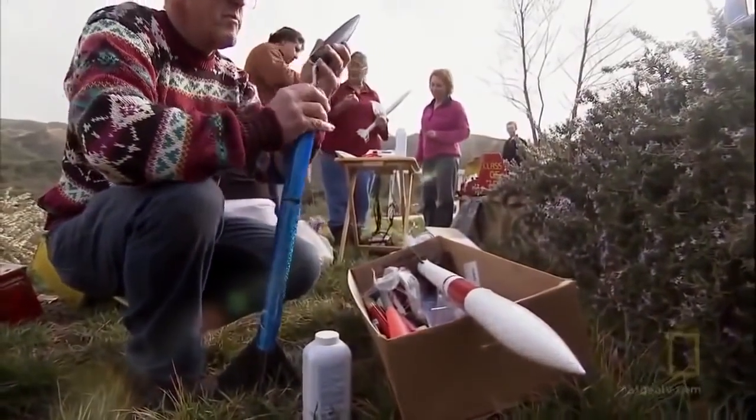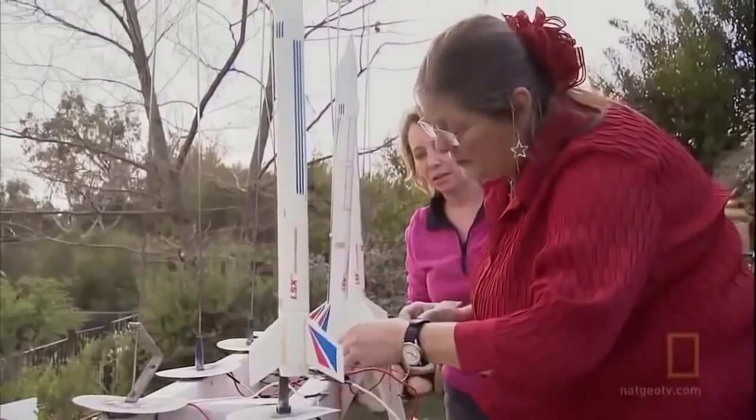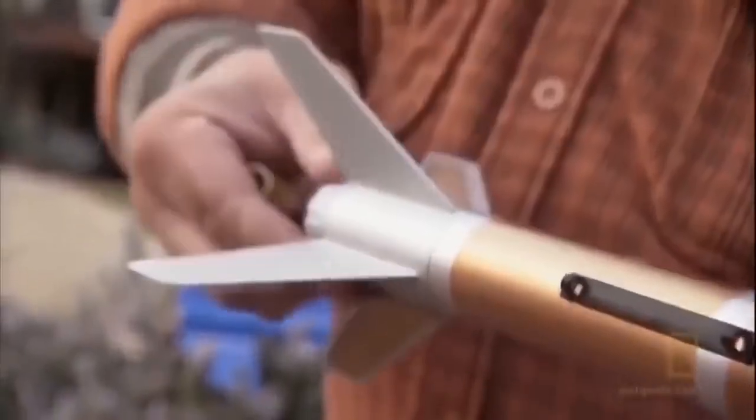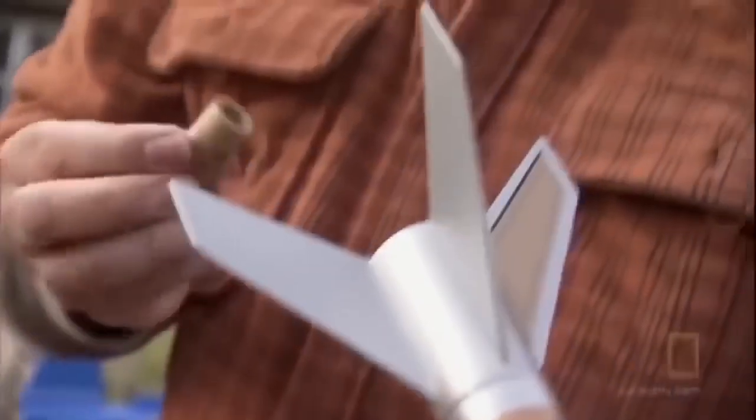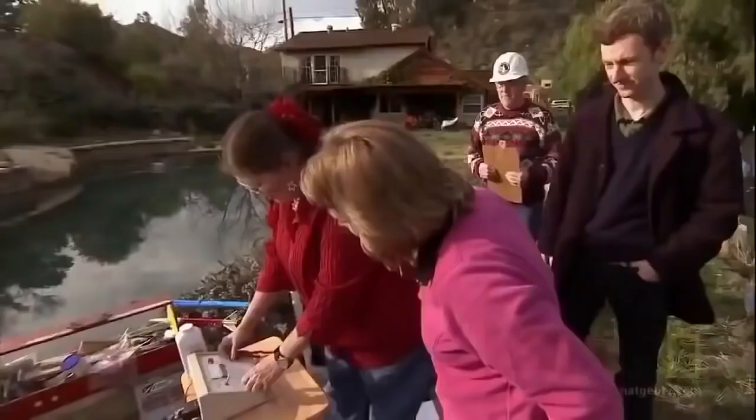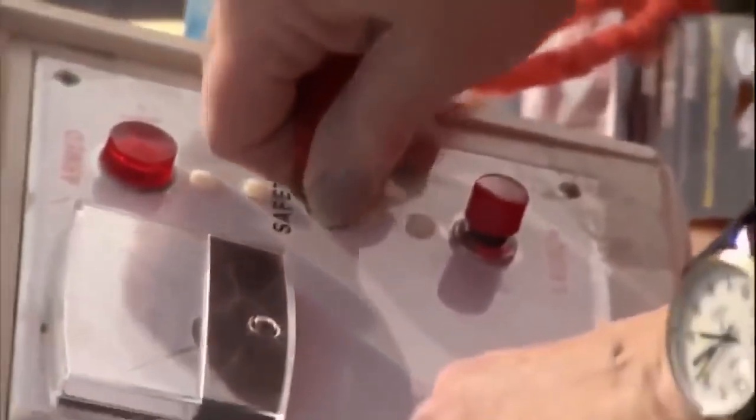A model rocket offers clues to how the big crunch would work. The rocket is like the universe expanding into space out of the big bang. An initial bang allows the rocket to overcome the pull of gravity.